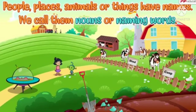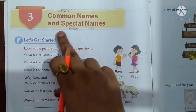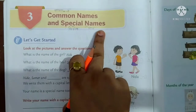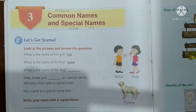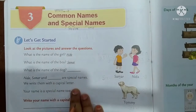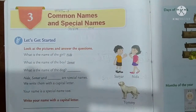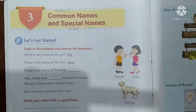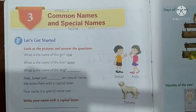Common and special names. In this lesson we are going to learn about common names and special names. This means your previous chapter is chapter 2 naming words, and chapter 3 matches both. If you understand the second chapter, the third chapter will come easily. So let's start.